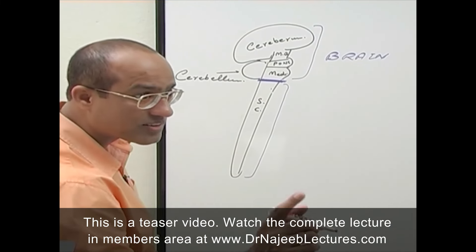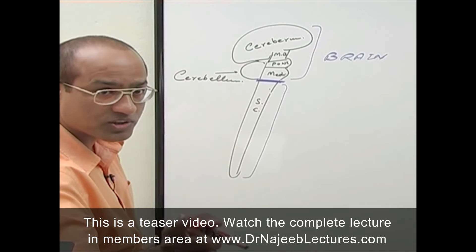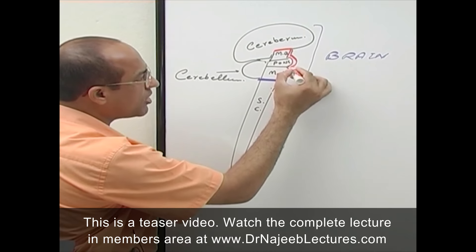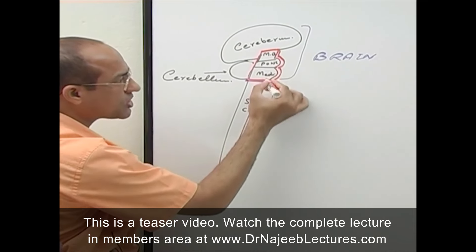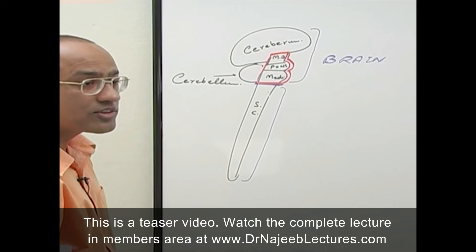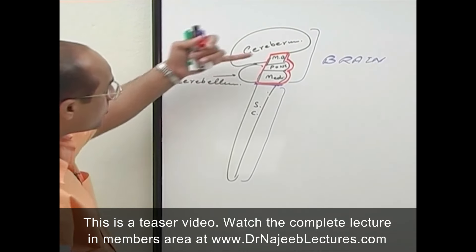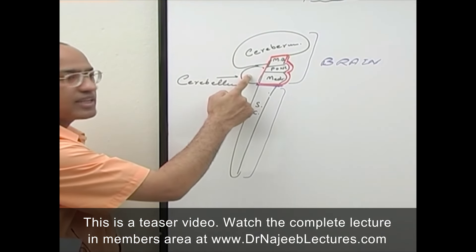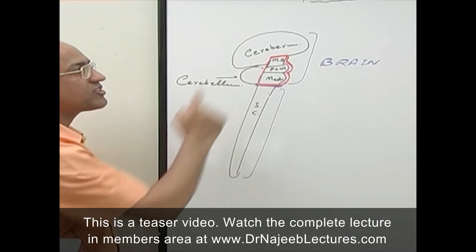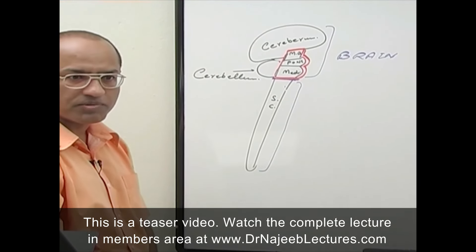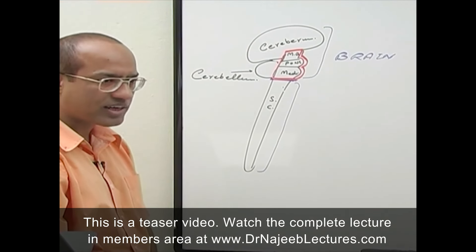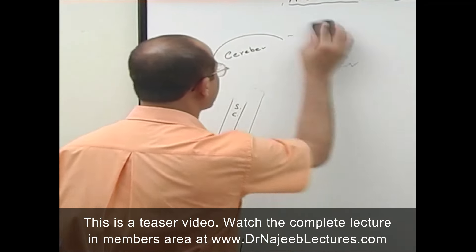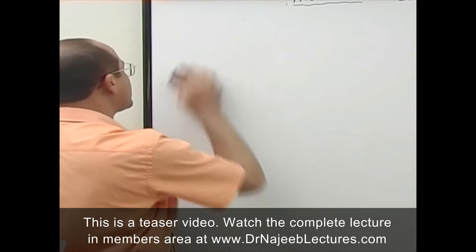So the central nervous system consists of the spinal cord and the brain. In the brain there is the brain stem, and the brain stem consists of three structures: midbrain, pons, and medulla. On the back of the brain stem you have the cerebellum, and above the brain stem you have the cerebrum or cerebral hemispheres.